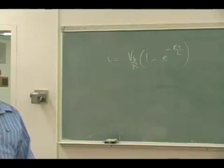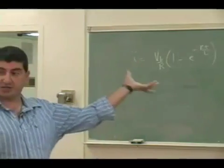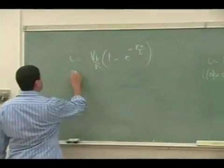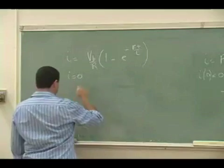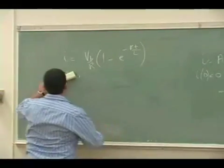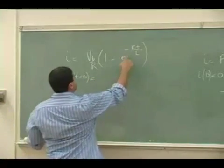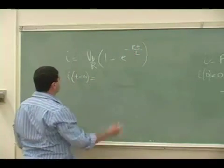Now let's see if it behaves as what we predicted based on our logic. If I put the current initially 0 at T equal to 0, so I of T equal to 0, what does it give me? E to the 0, 1 minus 1, so it does give me 0.